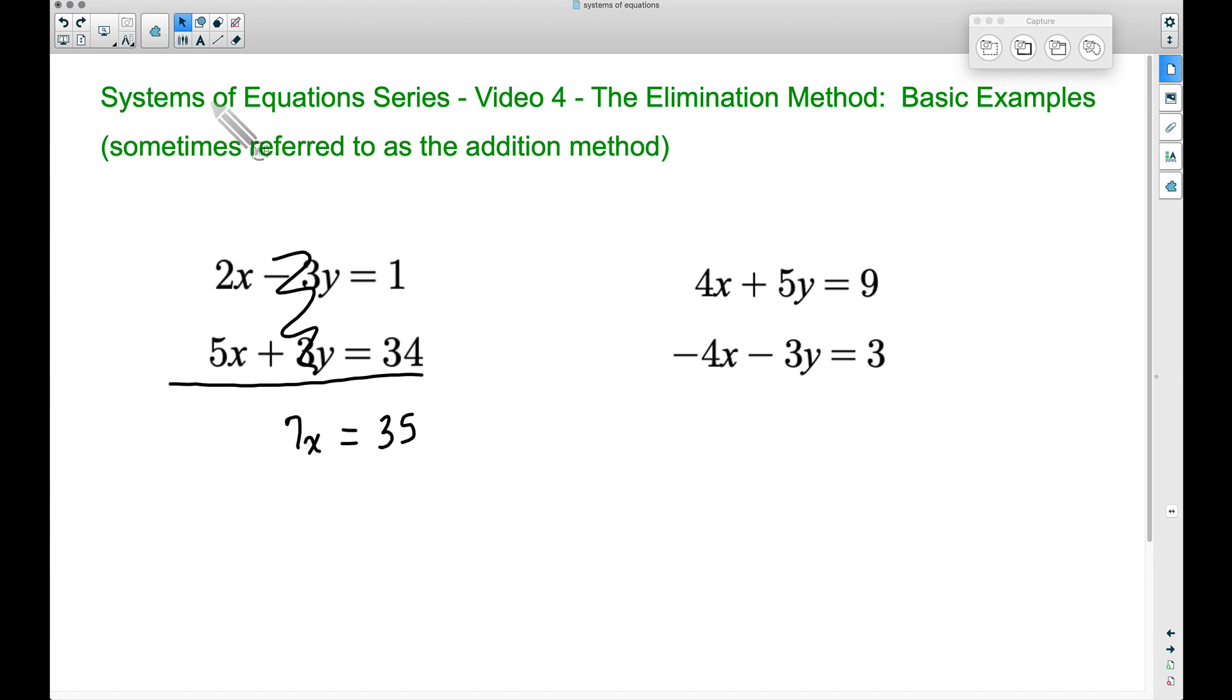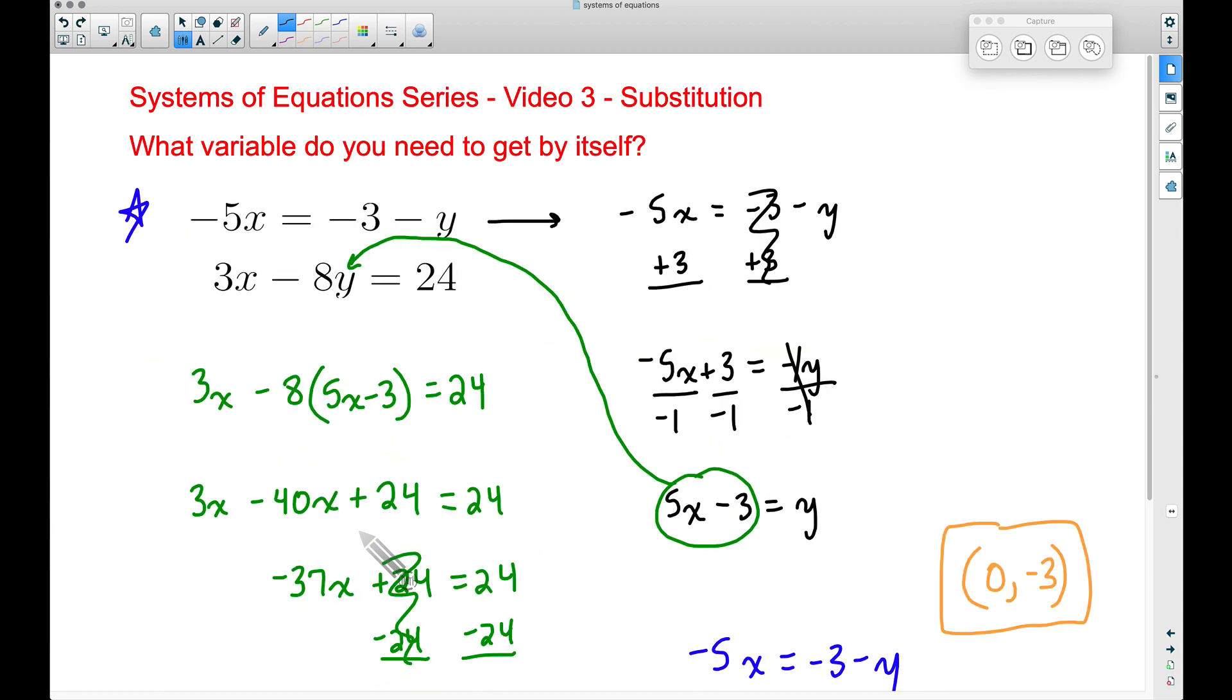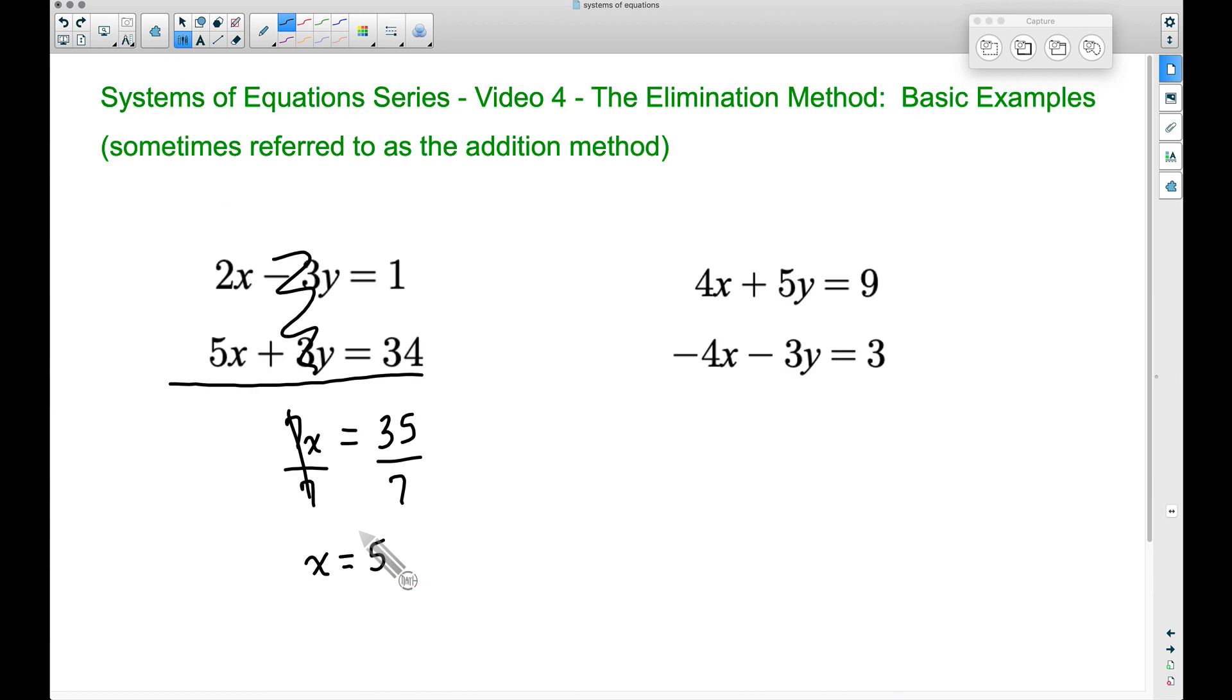So now our equation is 7x equals 35, and we can get x by itself by dividing both sides by 7, giving us x equals 5. Now we have to find the other variable. Just like in videos 2 and 3 with the substitution method, once you find one variable, you have to plug that back in to find the other variable.